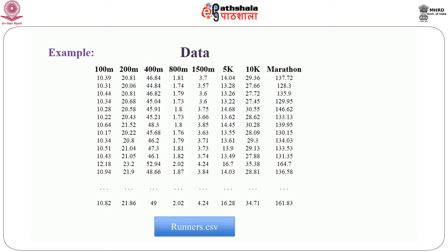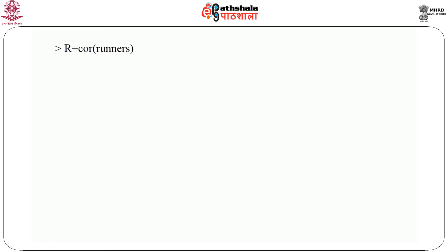We have data on different athletes and the times taken by those athletes to complete different races, like a 100 meter race, 200 meter race, and so on. Note that the times taken to complete the 100 meter, 200 meter, and 400 meter races are given in seconds, whereas the times taken to complete the other races are given in minutes. Firstly, we start by finding the correlation matrix of the data. We find the correlation matrix because the units of measurement of the different variables are different. So we first standardize the variables and find the dispersion matrix of the standardized variables, which is equivalent to finding the correlation matrix of the original data.